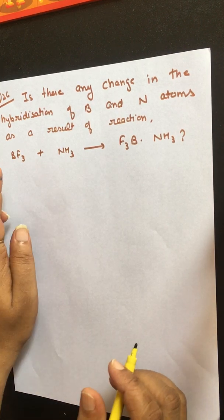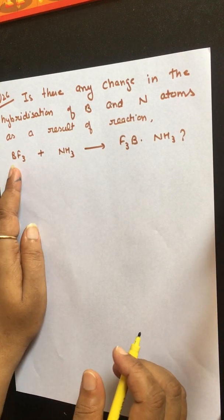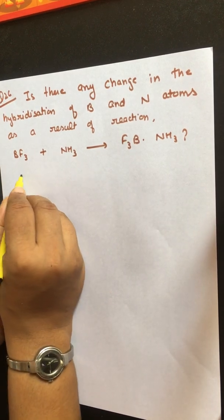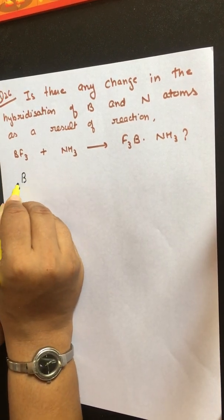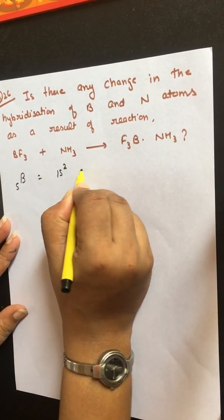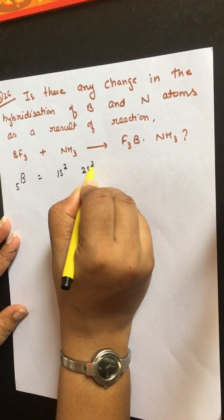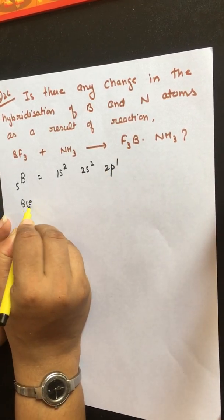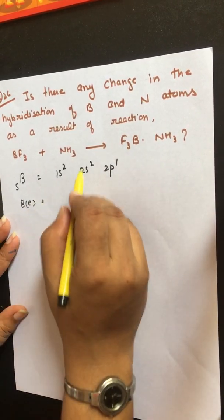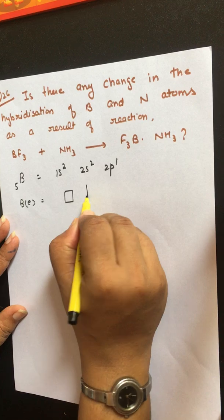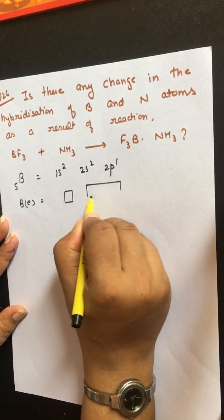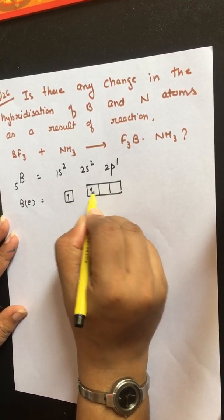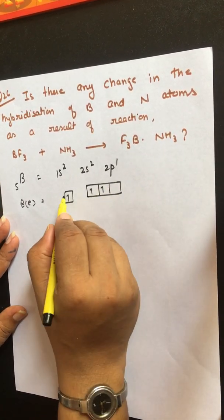Boron has atomic number 5 and its electronic configuration is 1s² 2s² 2p¹. In the excited state of boron, one electron from 2s flips to the 2p orbital, so three half-filled orbitals are available.